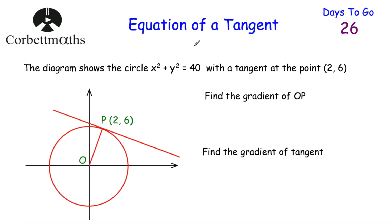Now to find the equation of a tangent to a circle, one thing to know is that the tangent and the radius of the circle will always meet at 90 degrees — that's one of your circle theorems. So if you can work out the gradient of the radius, then you can find the gradient of the tangent because they're perpendicular to each other. You'll then have a line where you know its gradient and a point it passes through, so you can use y equals mx plus c to find the equation of that line.